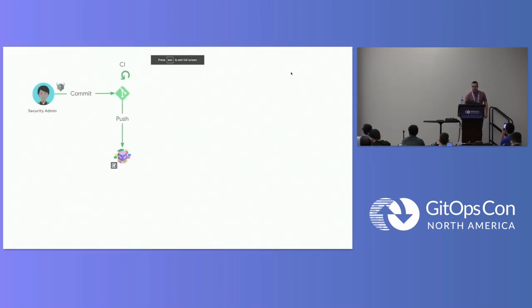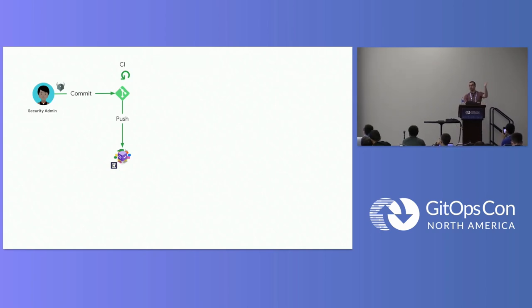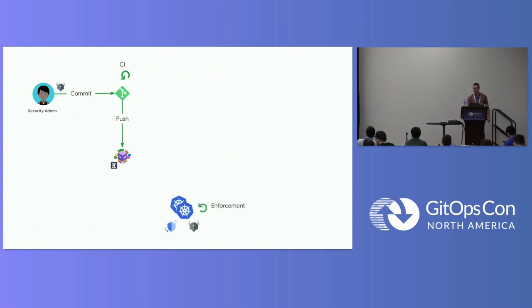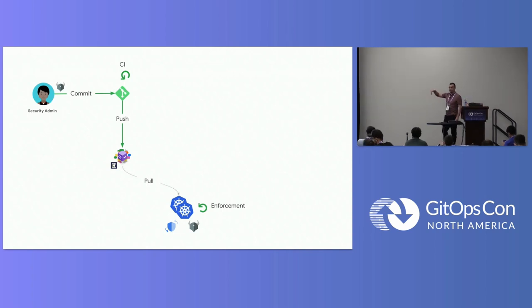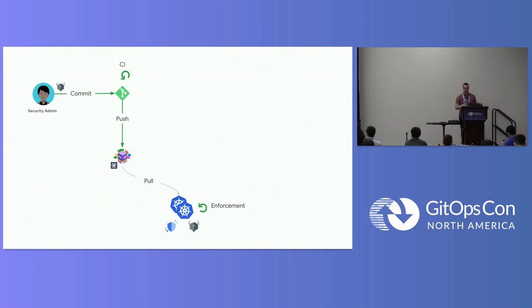That's the first part of the demo. As a security admin, I'm pushing an OCI artifact packaging my Gatekeeper policies. The clusters are already provisioned with ConfigSync and OPA Gatekeeper as admission controller. What we just illustrated is a pull mechanism — a deployment mechanism via GitOps.